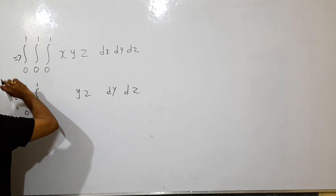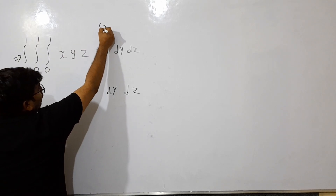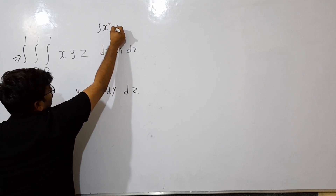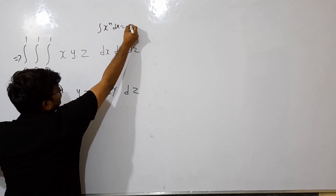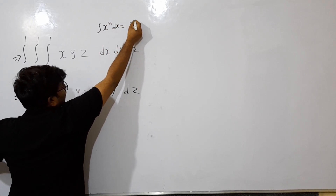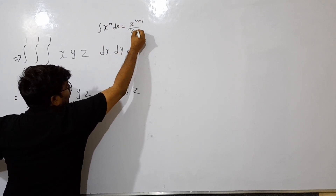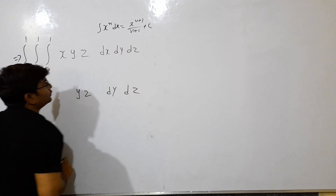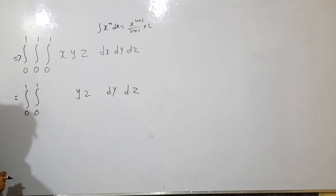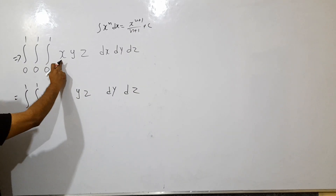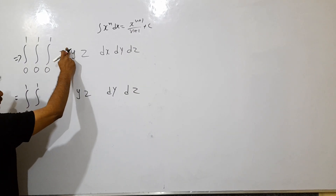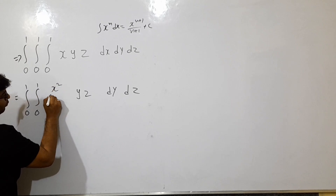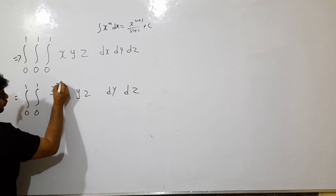The formula is: integration of X to the power of N, DX is equal to X to the power of N plus 1 by N plus 1. That is the formula. That means, you know what — pi means is 1 or not? That is 1 or not — you can add 2 by 2.